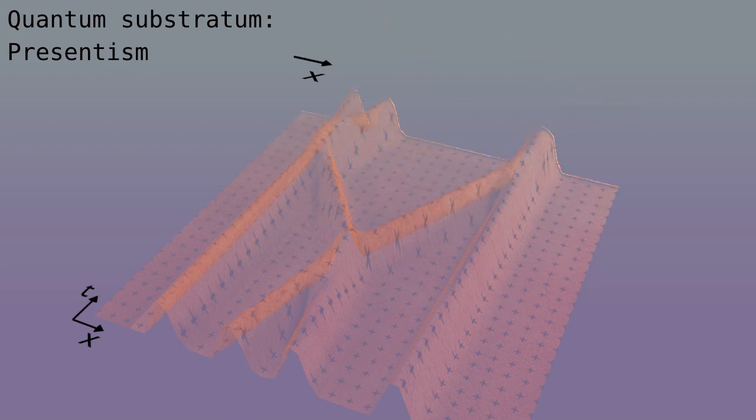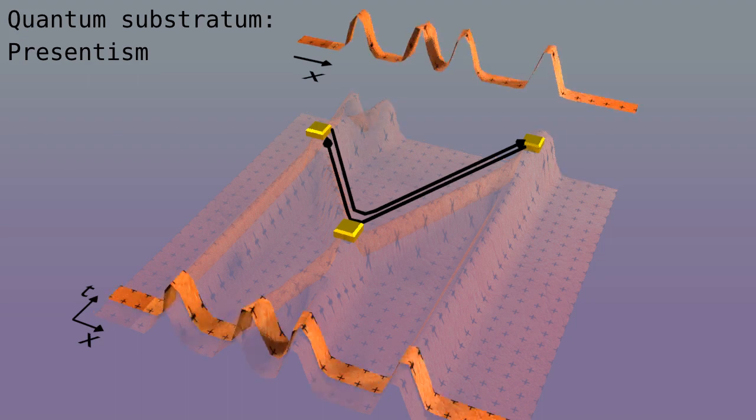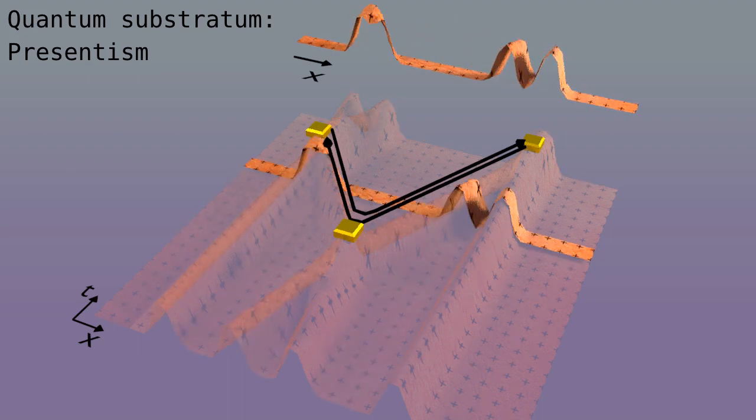The problem with entanglement is that a measurement creates an influence via an earlier interaction that is then felt by another measurement. How does this work with presentism? Well, it doesn't. By the time the first measurement happens, the interaction point no longer exists. Let's play that again.